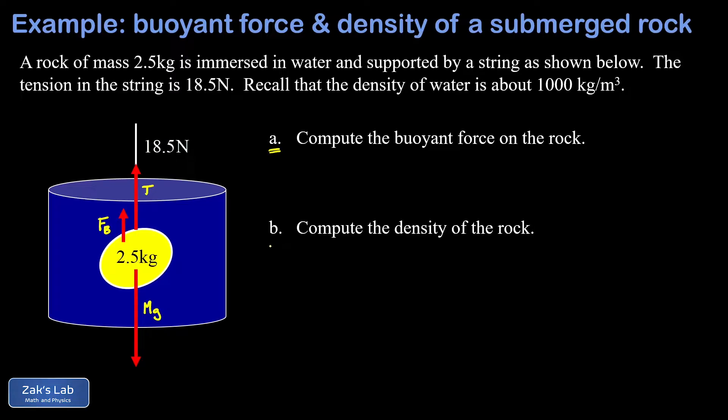The third force is the force of gravity acting down on this rock. Because this rock is just sitting there in equilibrium, these three forces must balance out. So I can write that T (the tension in the string) plus Fb (the buoyant force) equals mg (the weight). This immediately gives us the size of the buoyant force: Fb equals mg minus T.